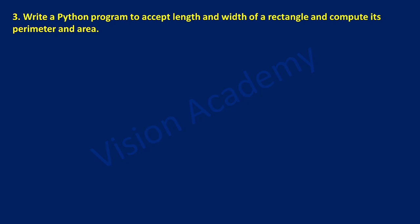Hello and welcome to Vision Academy. In this video we are going to study lab program 3: write a Python program to accept length and width of a rectangle and compute its perimeter and area.